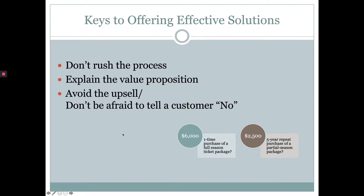A couple of keys and tips for offering effective solutions. The SPET process is important, but there are some other factors to consider. First and foremost: don't rush the process. One of the biggest mistakes sales reps make in ticket sales is jumping the gun — trying to sell before they have all the information needed to make an appropriate recommendation. You don't want to sell someone something they don't need or want. Very few sales are actually closed in the first or second phone call — it usually takes five or six calls to get the sale. Make sure you've gathered all the information you need before moving on to the presenting solution stage.